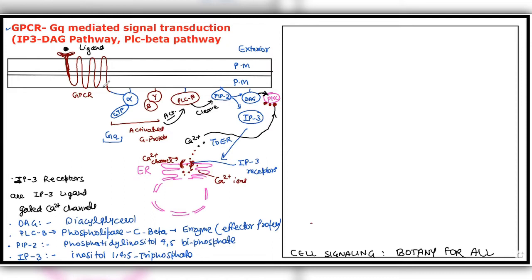One such pathway is the IP3-DAG pathway, which is also called the PLC-beta pathway. We are going to study this pathway now. What are effector proteins, what are receptors, what is GPCR, how is GPCR activated, how is G protein activated — for all of this you should watch the previous video so you can understand these issues well. Basically, this pathway is also a GPCR pathway, i.e., a G protein coupled receptor pathway.